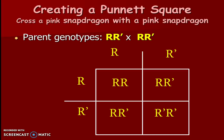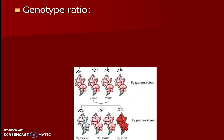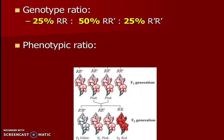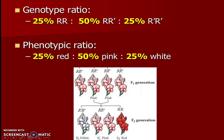The next step is doing our ratios — finding our genotype and phenotype ratios. Our genotype ratio: 25% big R big R, 50% the hybrid, and 25% R prime R prime — written as a ratio that's 1:2:1. Our phenotype ratio is also interesting because instead of two phenotypes we have three phenotypes for incomplete dominance: white, pink, or red. So 25% white, 50% pink, and 25% red. That's incomplete dominance — when white and red mix to make pink.